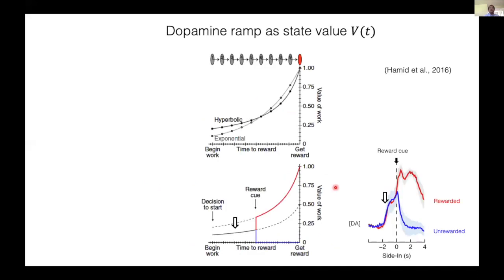Building on this framework, Hamid et al. proposed that dopamine ramps correspond to the state value of V of t. In these tasks, reward comes typically near the end of a trial. The value is maximum just before the reward and goes down backward in time with a fixed rate gamma. In this case, the value follows an exponential decay function indicated by the gray line. Hamid et al. proposed that these ramping signals correspond to this value function indicated here.